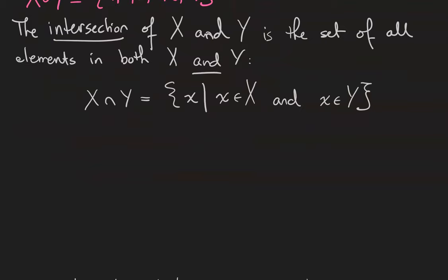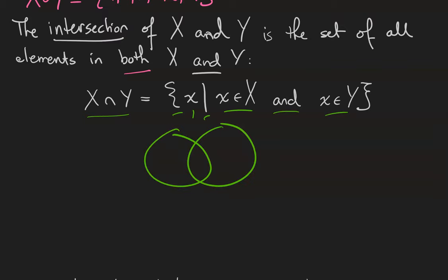The intersection of x and y is the set of all elements that are in both x and y. In set builder notation, the intersection of x and y is the set of all x such that x is a member of x and x is a member of y. The Venn diagram shows only the elements that are in common to both sets.